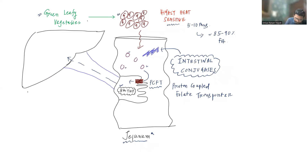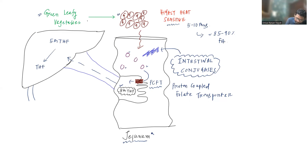From the liver, folic acid goes into the systemic circulation. In the liver, 5-methyltetrahydrofolate can be converted to tetrahydrofolate for the various reactions we discussed, with the help of vitamin B12. The liver is also a storage site for folic acid.